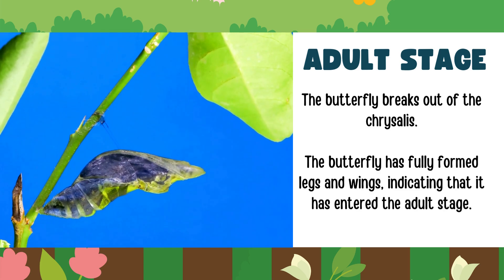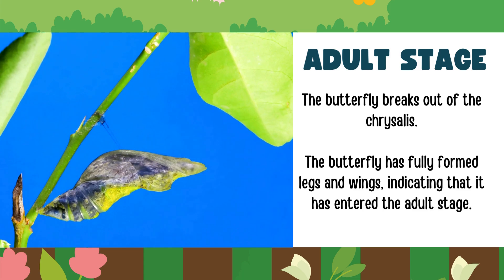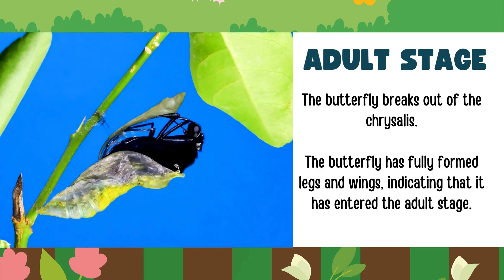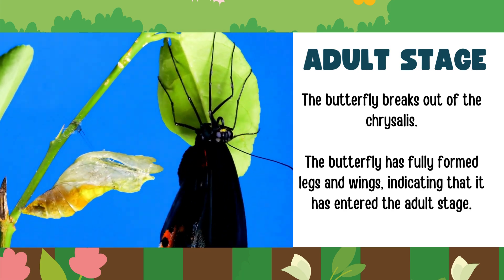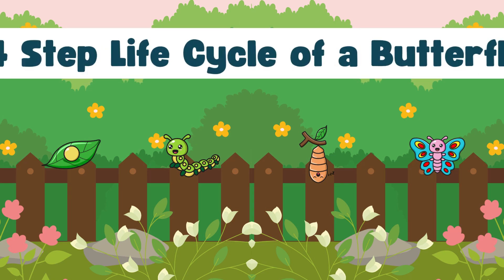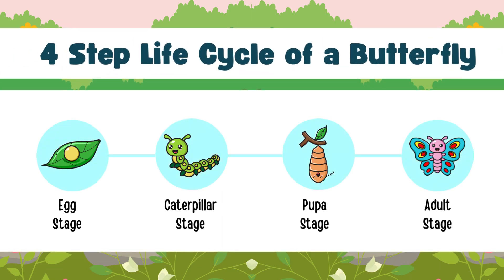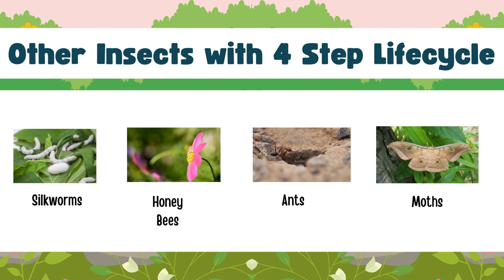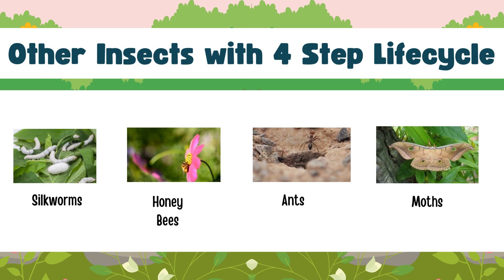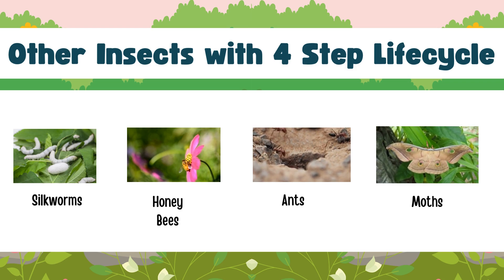From the pupa emerges a beautiful butterfly. The butterfly is fully formed with legs and wings, indicating that it has entered the adult stage. So the four-stage life cycle of a butterfly includes the egg stage, caterpillar, pupa, and the adult stage. Other insects may also have a four-stage life cycle, including silkworms, honeybees, ants, and moths.